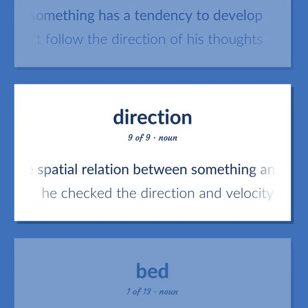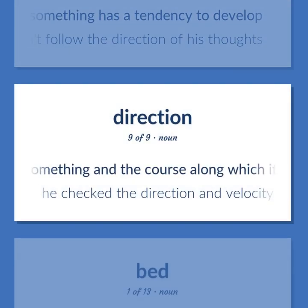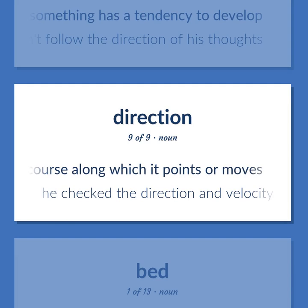The spatial relation between something and the course along which it points or moves. He checked the direction and velocity of the wind.